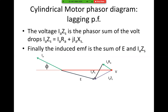So for a motor, E is always lagging behind V. And for a lagging power factor, E is less than V — opposite to the alternator, where when the current is lagging, the induced EMF is bigger than the voltage. So there we have E angle delta equals V angle zero minus ImZs angle beta minus phi.